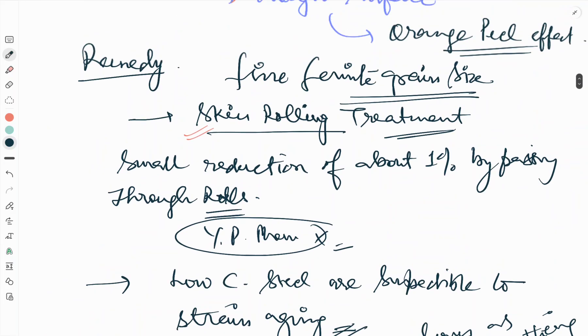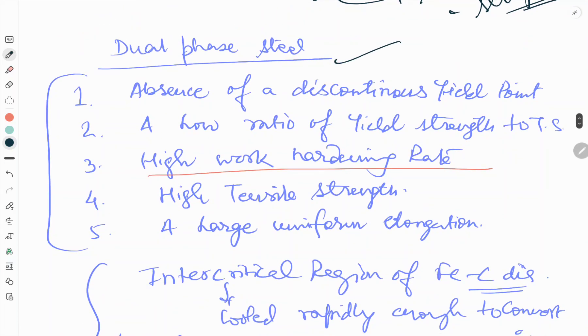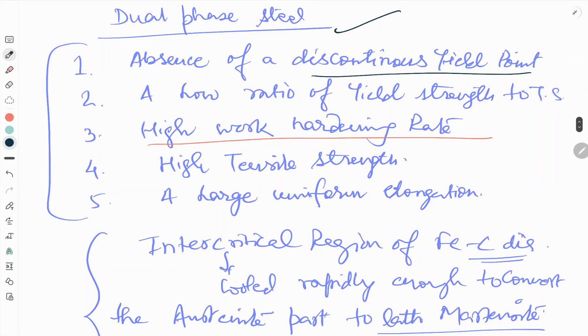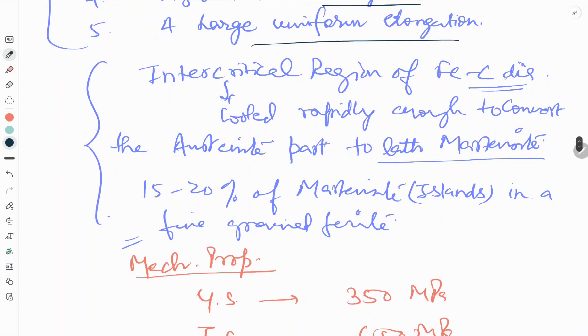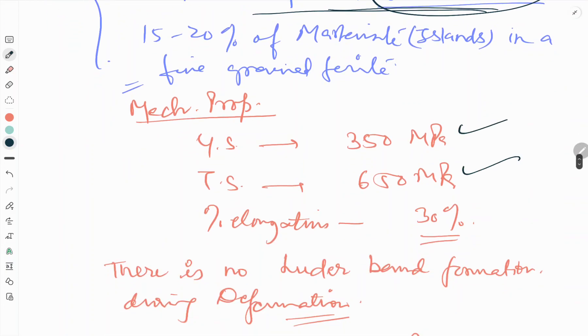To recap: absence of discontinuous yield point, low ratio of yield strength to tensile strength, high work hardening rate, high tensile strength, and large uniform elongation are the key characteristics. The steel is heated in the intercritical region of the iron-carbon diagram and then cooled rapidly to convert austenite to lath martensite, increasing yield and tensile strength. There is no Lüder band formation due to deformation.